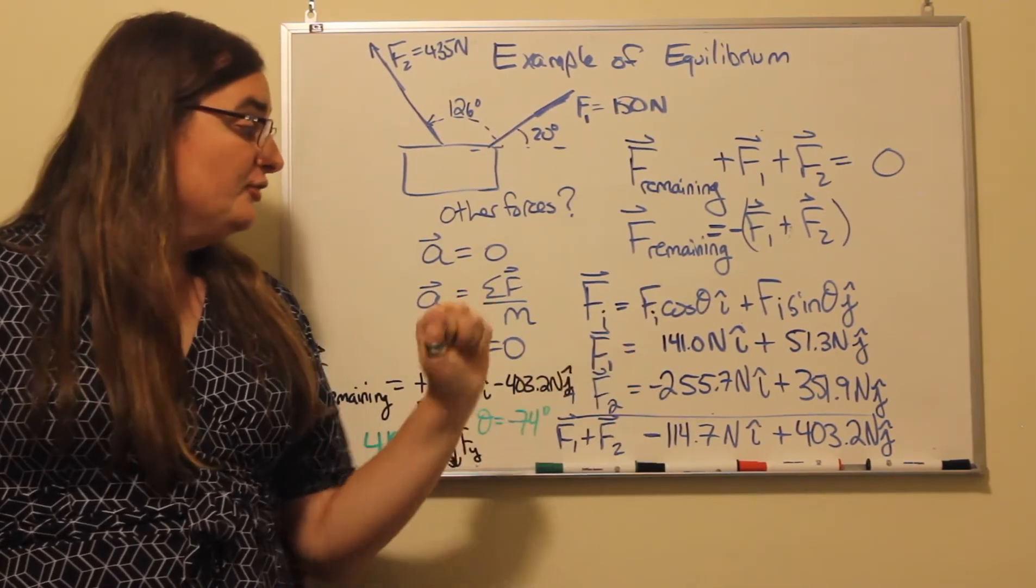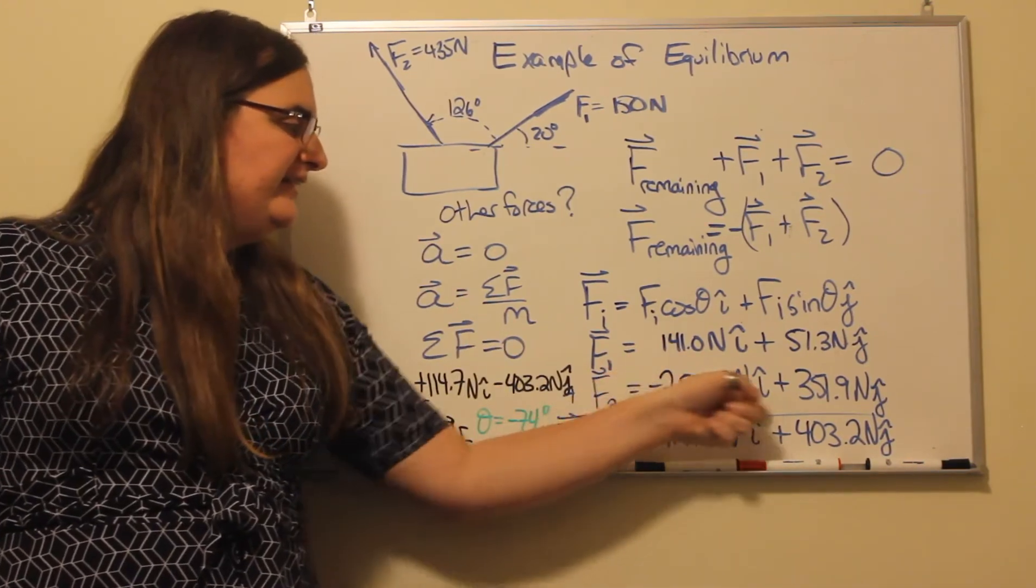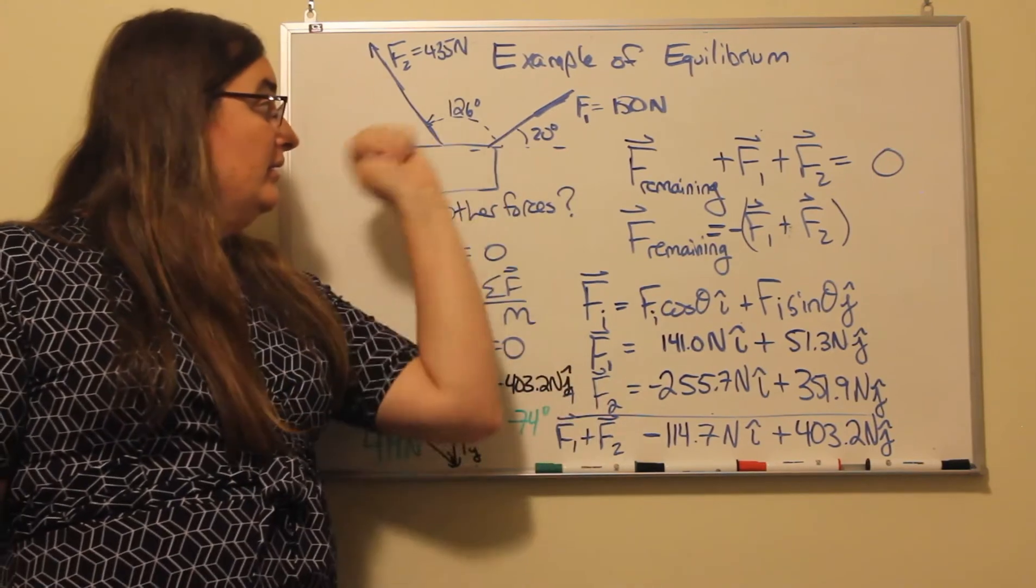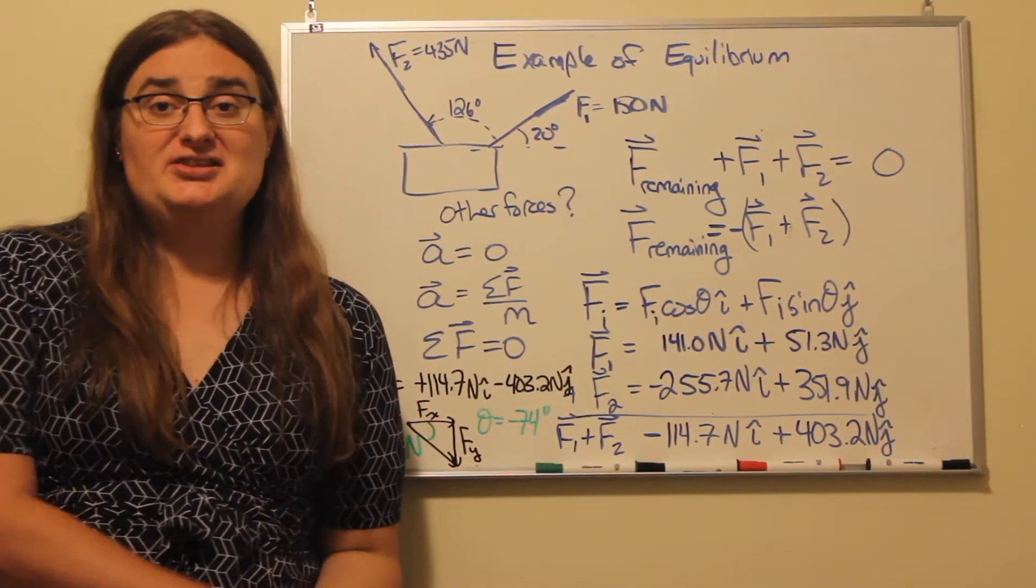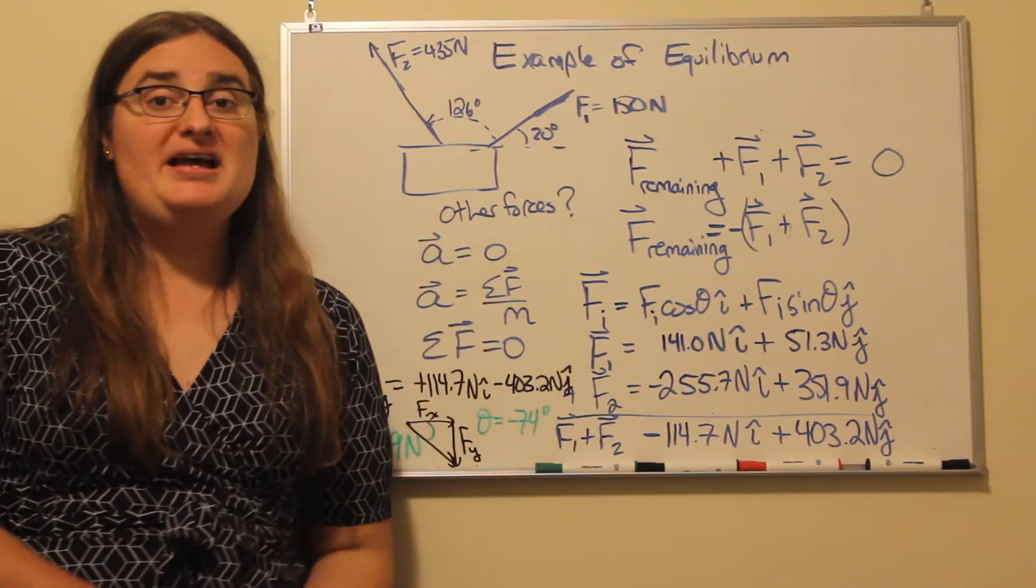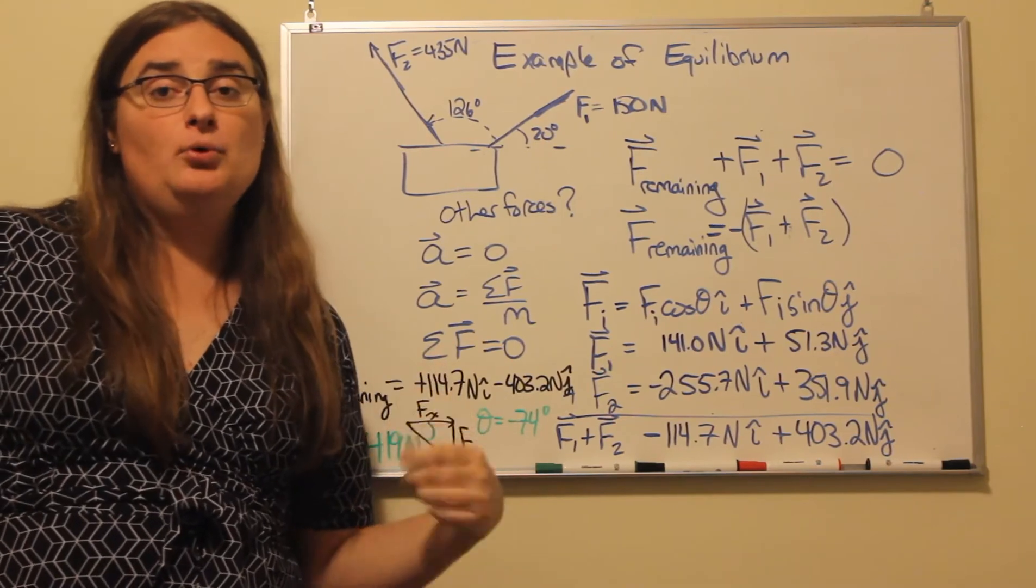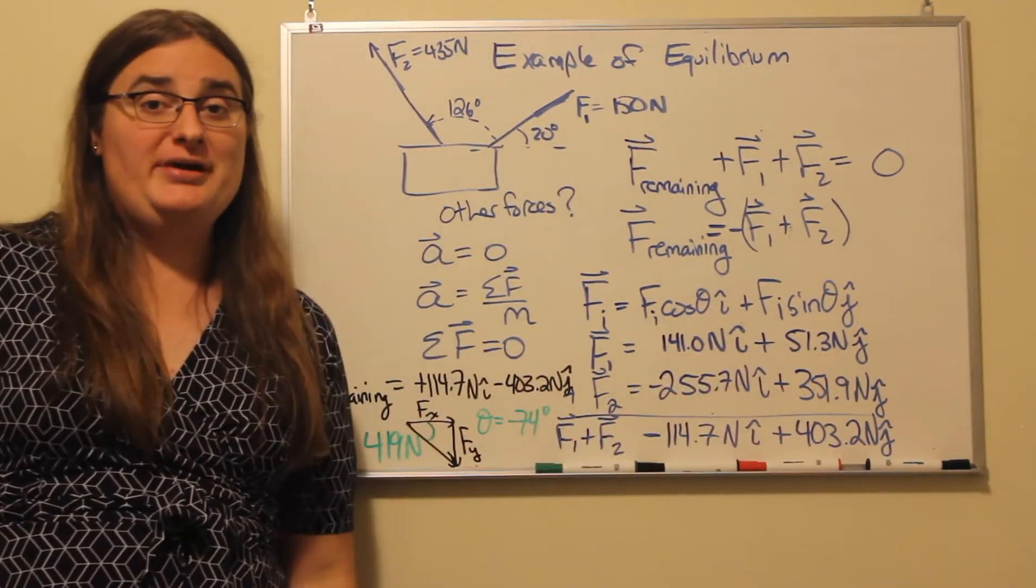And if I take the sine of 126 degrees, multiply it by my magnitude of 435 newtons, then that gives me 351.9 newtons in the positive y direction.